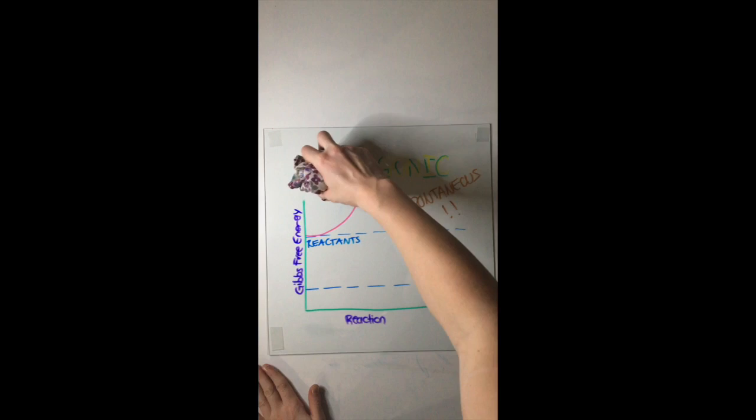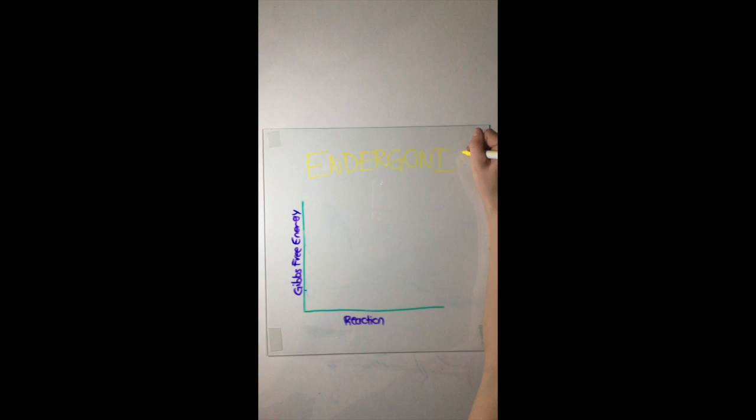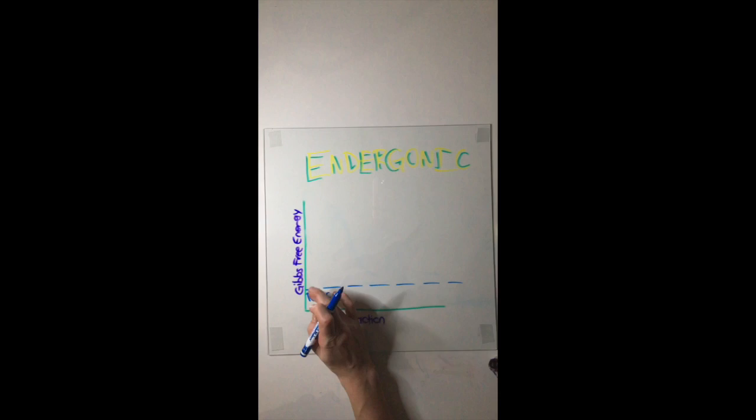As you might have guessed, there are also non-spontaneous processes. These are called endergonic processes, and they decrease entropy, but they increase in free energy at the end, giving them positive total Gibbs free energy at the end of the reaction.